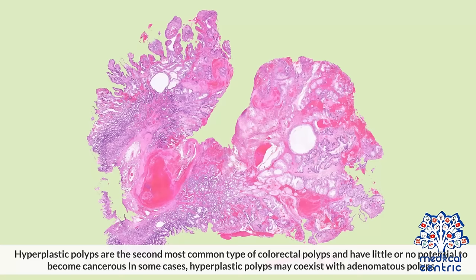Hyperplastic polyps are the second most common type of colorectal polyps and have little or no potential to become cancerous. In some cases, hyperplastic polyps may coexist with adenomatous polyps.